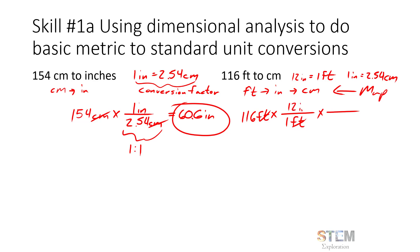I want to go from feet to inches, so I put the foot on the bottom so it cancels and 12 inches on top to switch to units of inches. Then I have a conversion factor from inches to centimeters: one inch on the bottom and 2.54 centimeters on top. Now I multiply 116 by everything in the numerator and divide by everything in the denominator. The denominators are one, so: 116 × 12 × 2.54 = 3535.7 centimeters.